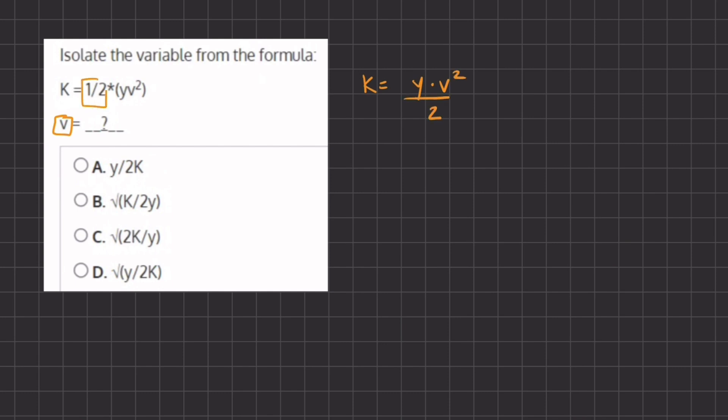Now if we want to isolate v, we want to get rid of y and 2. In order to get rid of them we can multiply by the reciprocal on both sides, so that means we can multiply by 2 over y on both sides.